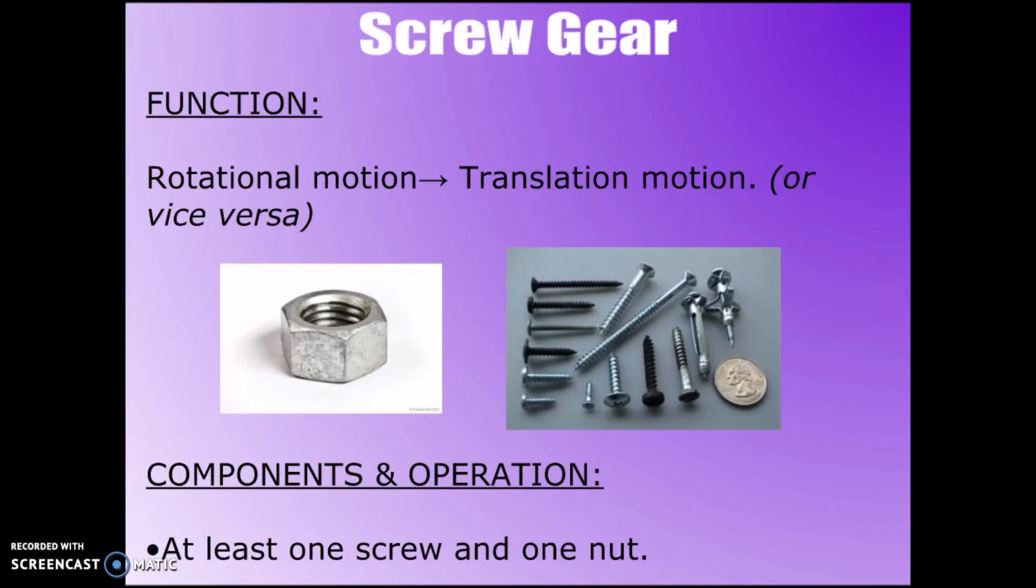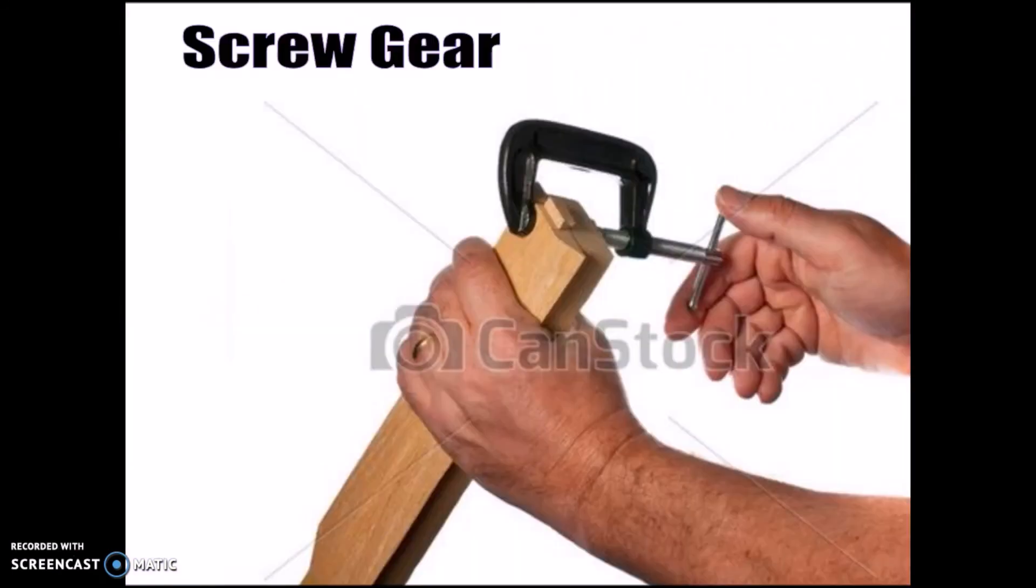The screw gear is something you're probably very familiar with already. Its components are one screw and one nut, at least. It could have more than that. If you've ever built something before, you may have already used a C-clamp. That is a screw gear system example.